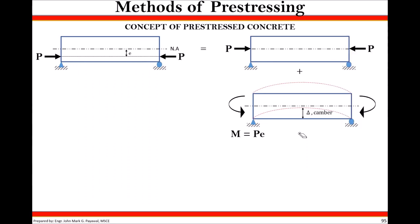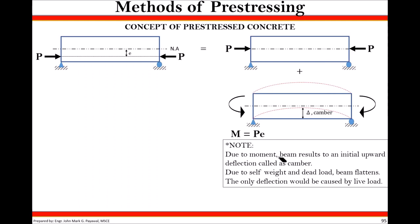Due to the moment PE, the beam exhibits an initial upward deflection called the camber. Due to self-weight and dead loads, the beam flattens. The analogy is like a tuition rebate — your balance is negative (camber), but when you enroll (add load), it goes back to zero. The only remaining deflection is caused by the live load. The stresses to be considered in pre-stress are: (1) direct compressive force by the tendons, (2) moment due to eccentricity of pre-stress, and (3) flexural stress due to service/working loads.